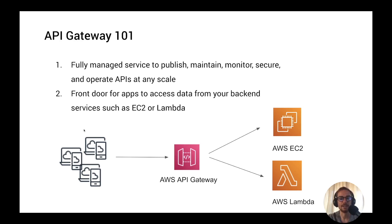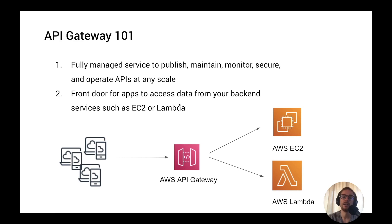So you have your clients — users with laptops and devices — and they want to access some services or data on your EC2 instances or Lambda functions, or whatever AWS service you can think of. They will need a front door to send the request to. This will be the AWS API Gateway, which can integrate with different AWS services. I'll explain later in the second part of the video how to integrate the API Gateway with a Lambda function.